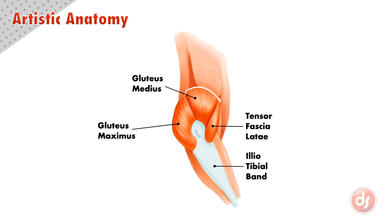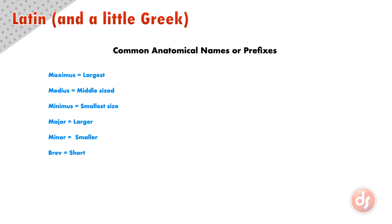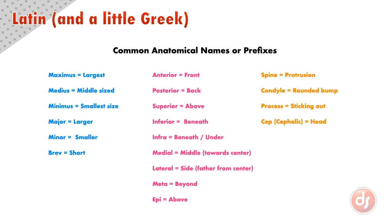Most anatomy terms are named in Latin to act as a sort of common language, but there are also some Greek and other terms mixed in. It's important to understand the meaning of these terms because the landmarks and muscles are often named for their location, function, or shape.